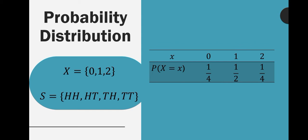The sample space can be seen on the left portion of that slide. As you can see, it contains two heads, head-tail, tail-head, and two tails. A probability distribution contains the elements of the random variable and the corresponding probability of these values of the random variable.